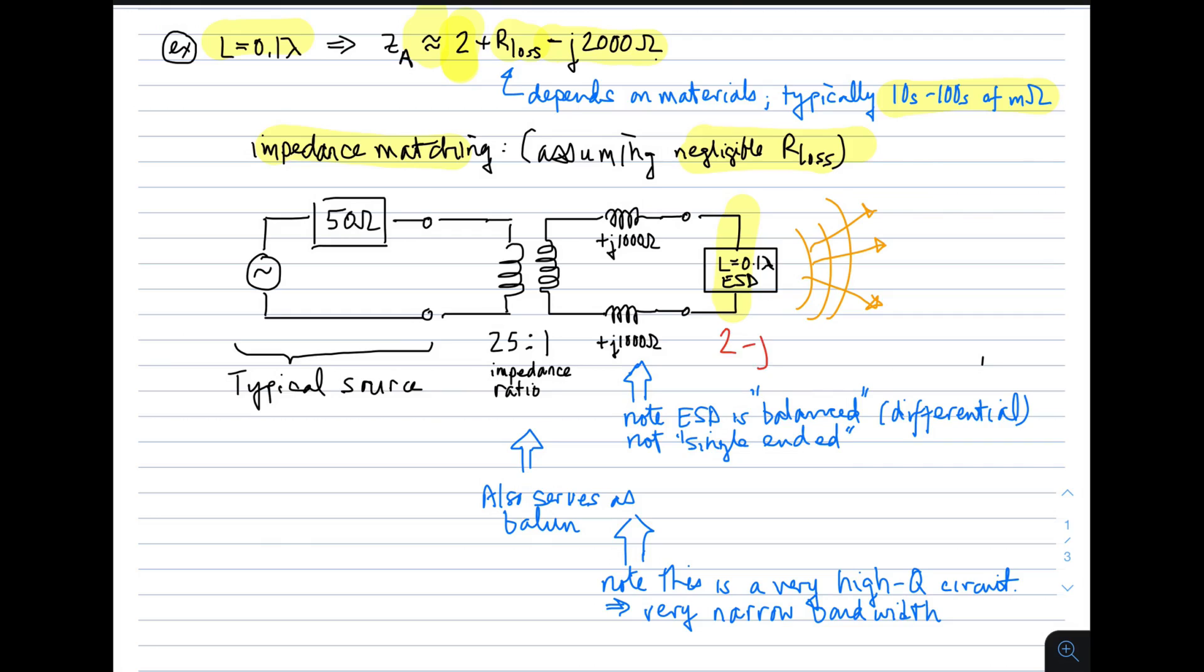And we want to match that to a typical transmitter. So a typical transmitter we can represent as a Thevenin equivalent circuit, which has a typical output impedance. We'll say in this case 50 ohm. Not because all such transmitters have 50 ohm output impedance, but many do. And it's a useful case.